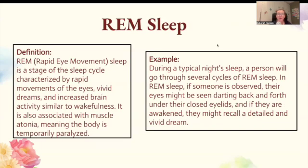REM sleep. REM, or rapid eye movement sleep, is a stage of the sleep cycle characterized by rapid movements of the eyes, vivid dreams, and increased brain activity similar to wakefulness. It's also associated with muscle atonia, meaning the body is temporarily paralyzed. During a typical night, a person will go through several cycles of REM sleep — their eyes might be seen darting back and forth under their closed eyelids, and if awakened, they might recall a detailed, vivid dream.